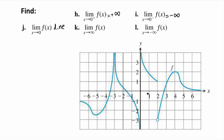Now we concentrate on the limits at infinity — the end behavior of the graph of this function f. As x gets larger and we keep going to the right, the y values taper off and approach the horizontal axis, which means the limit of f as x approaches infinity is 0.